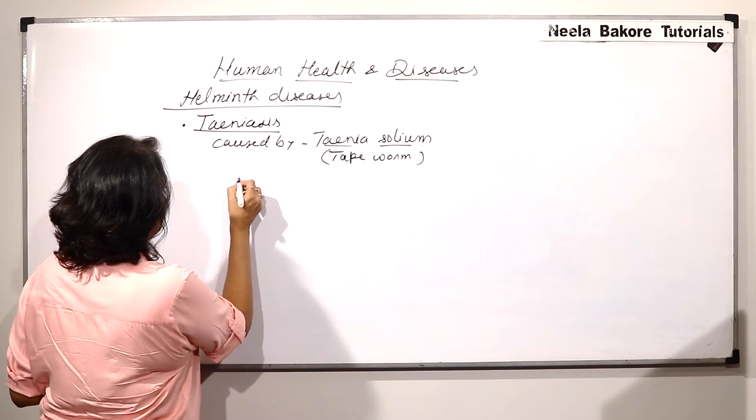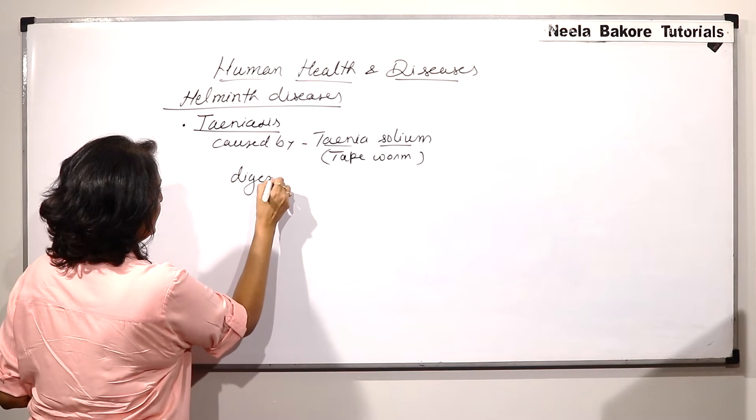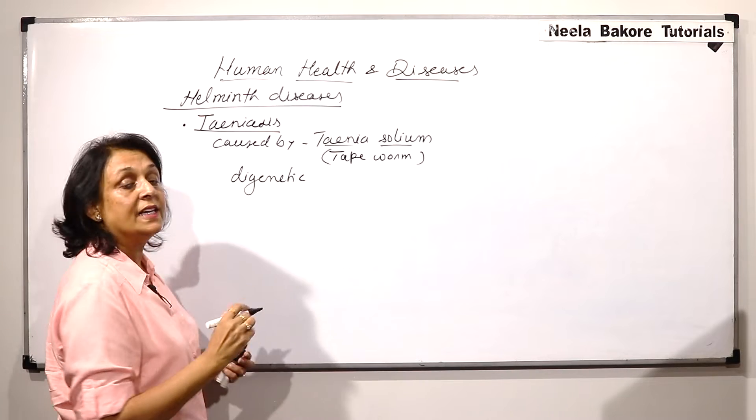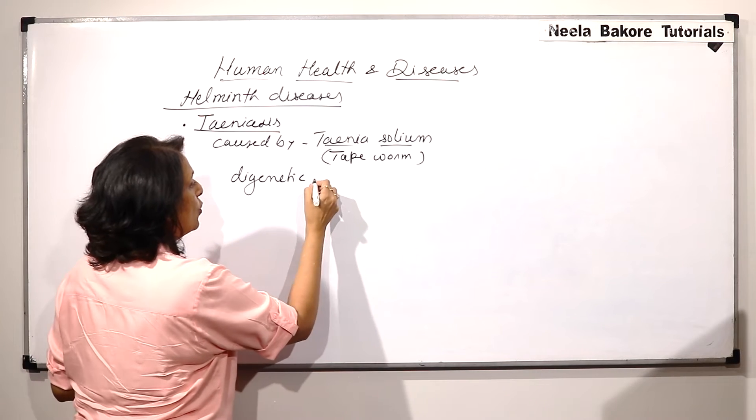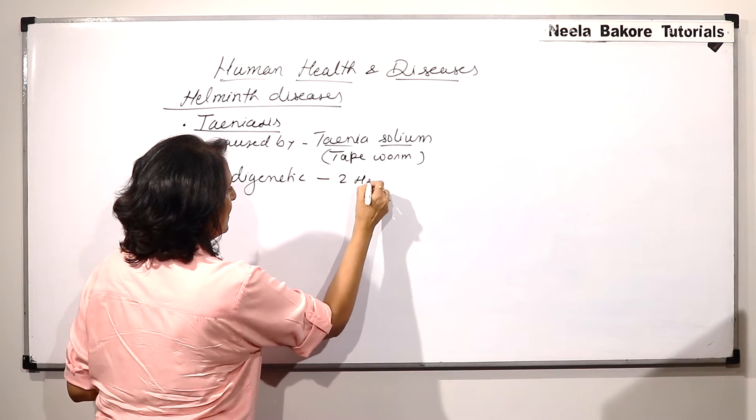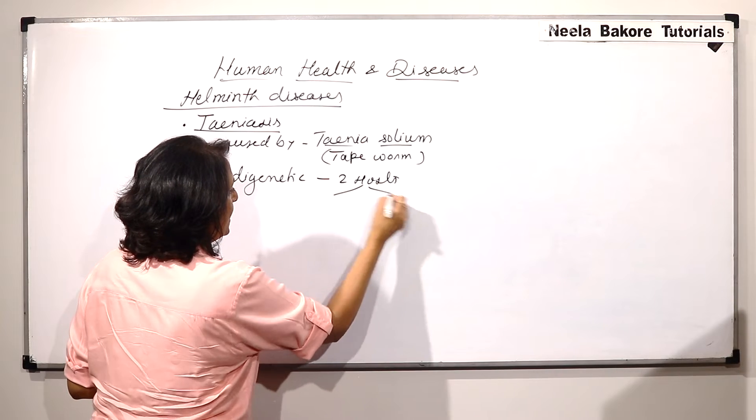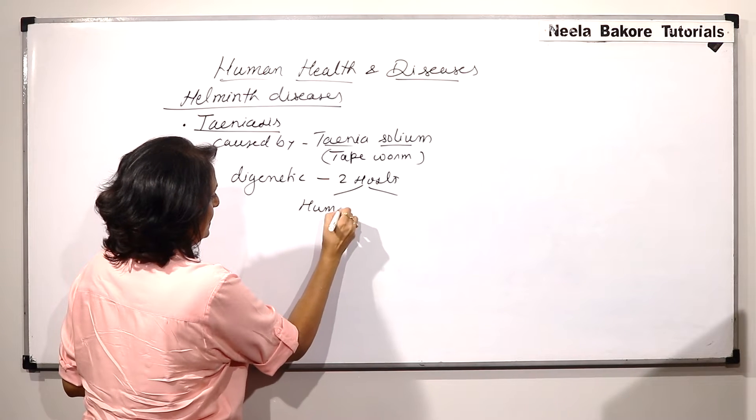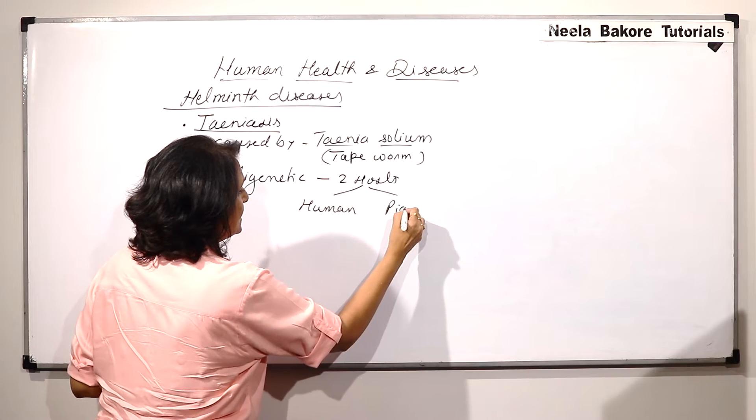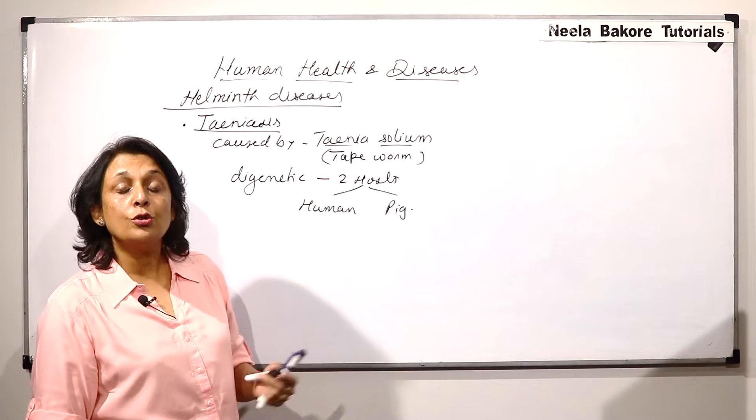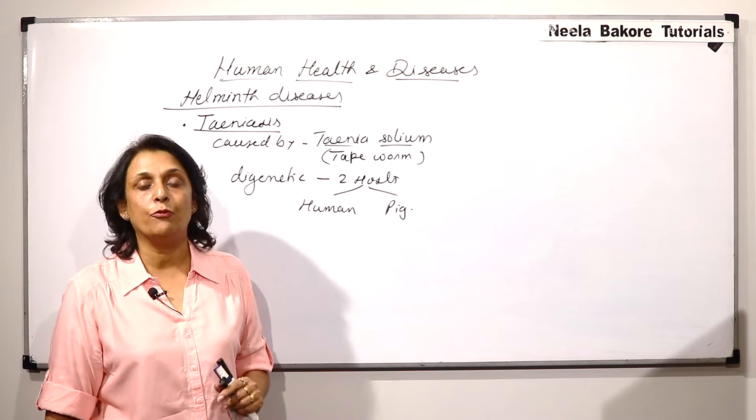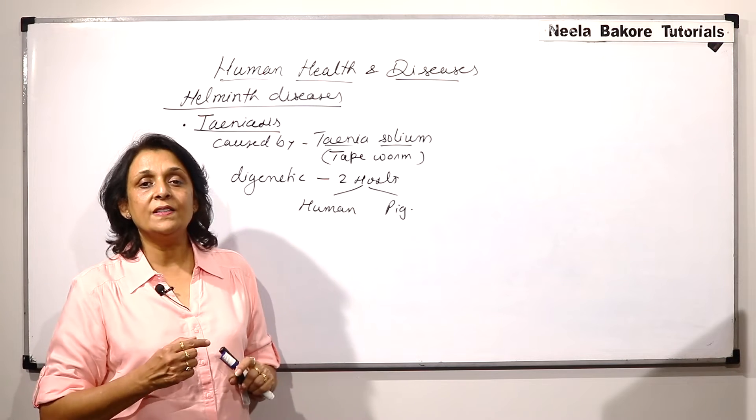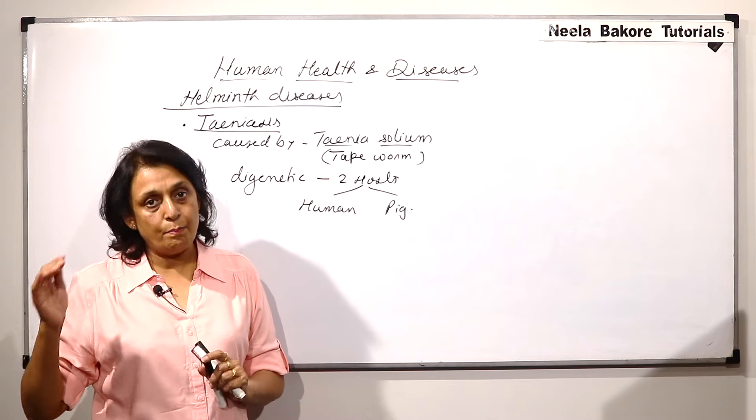It is digenetic. That means it completes its life cycle in two hosts. One is human and other is pig and that is why it is also known as pork tapeworm. So, it completes its life cycle in a pig.